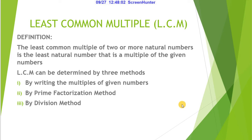Hi, in this video we will learn about LCM. What is LCM? Least Common Multiple. Definition: The least common multiple of two or more natural numbers is the least natural number that is a multiple of the given numbers. LCM can be determined by three methods: by writing the multiples of given numbers, by prime factorization method, and by division method.